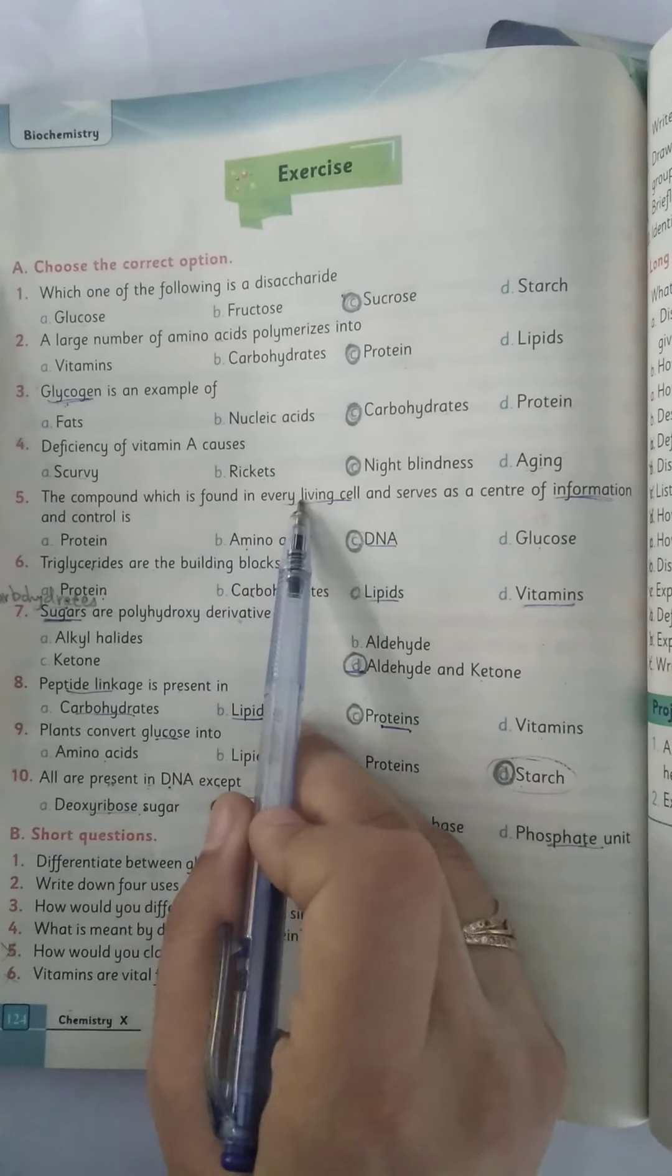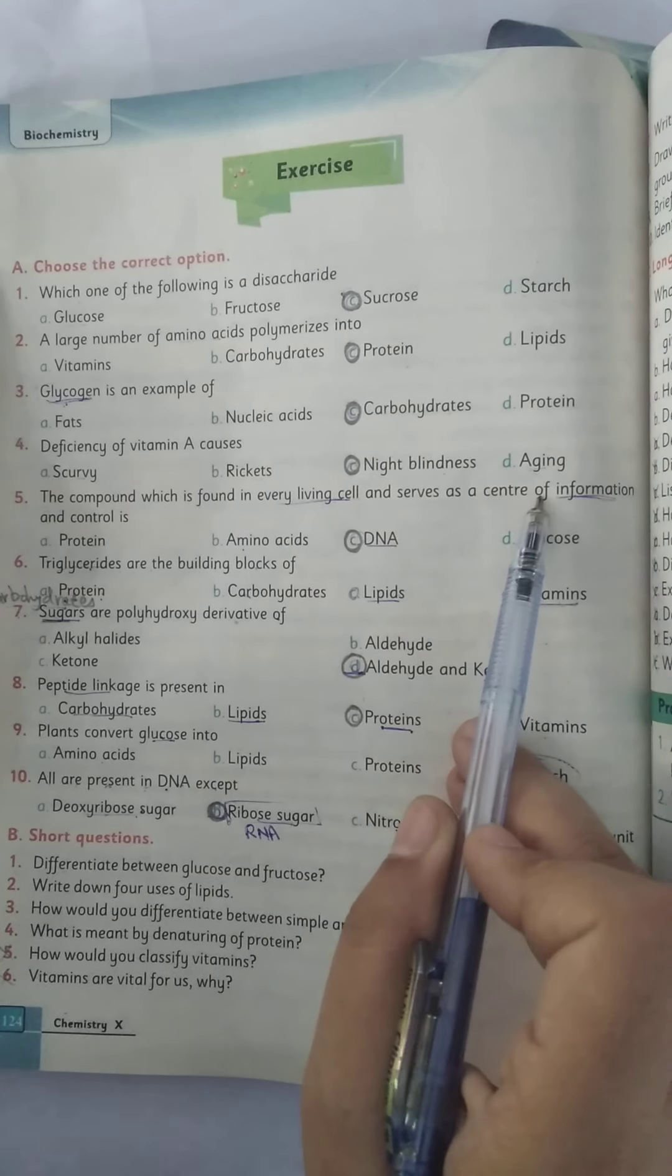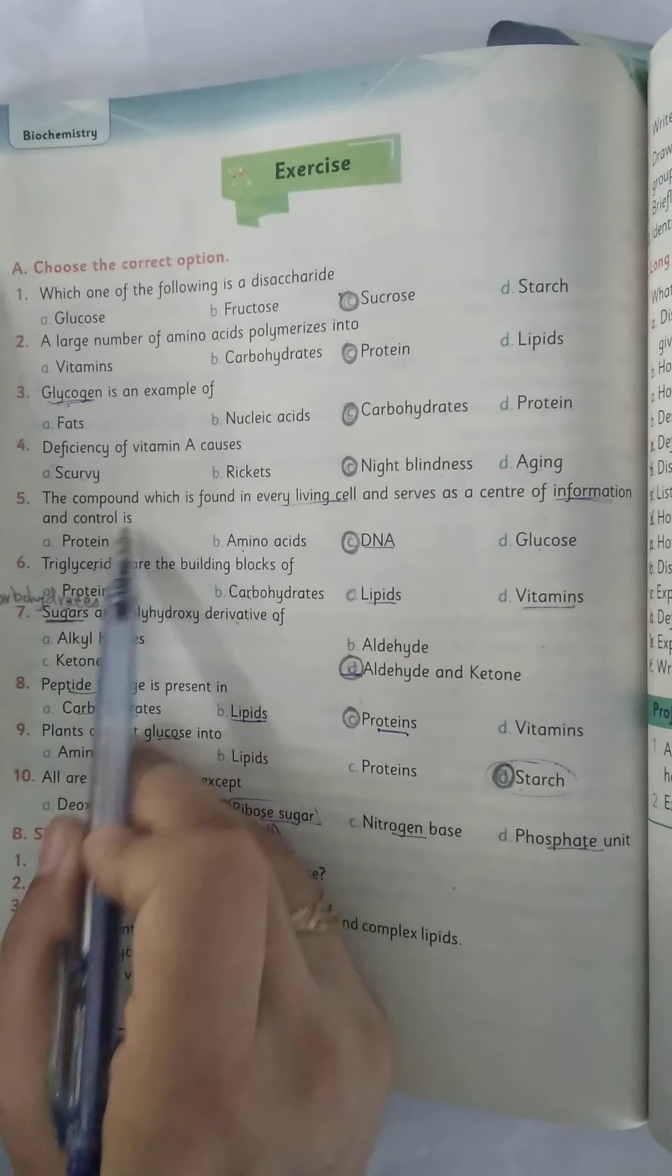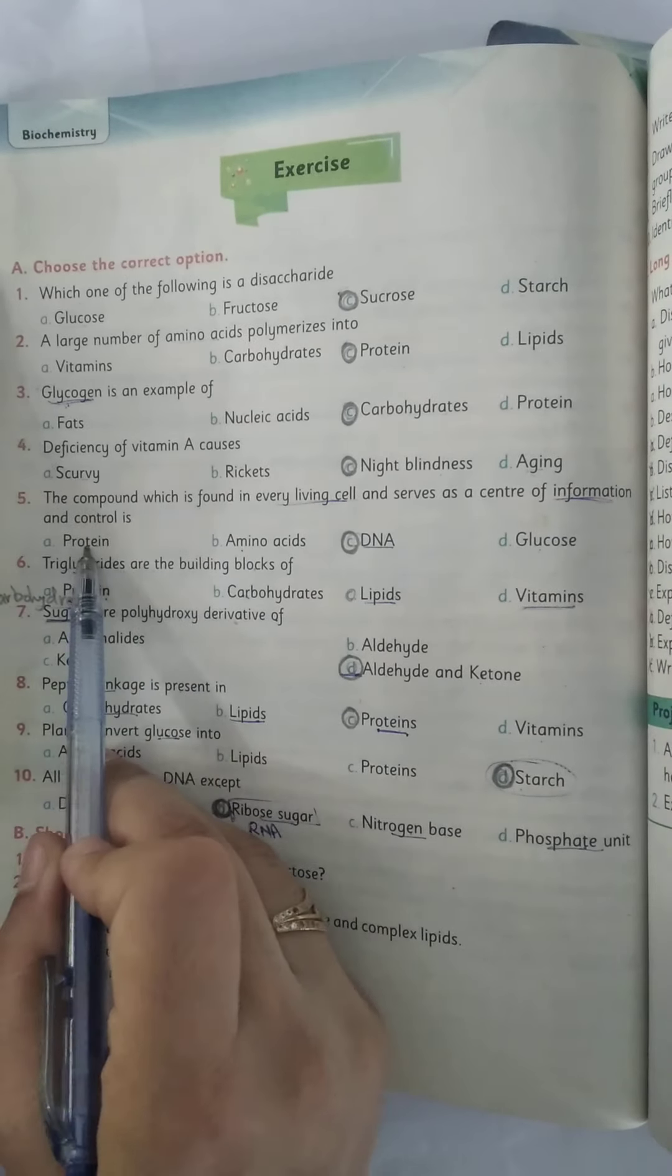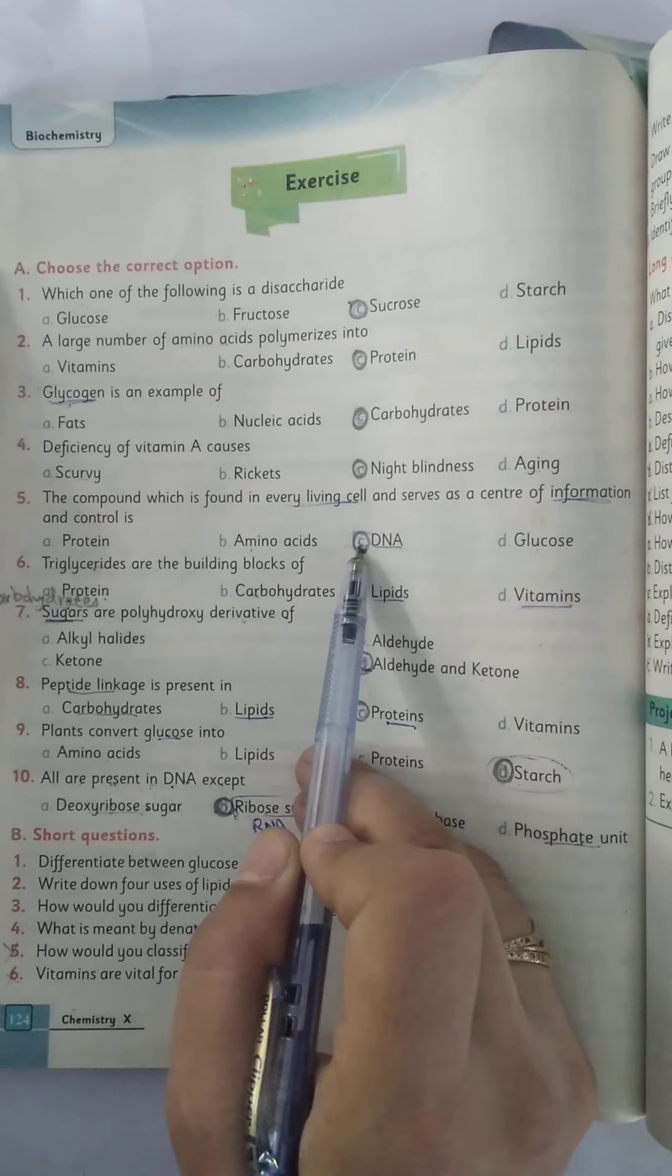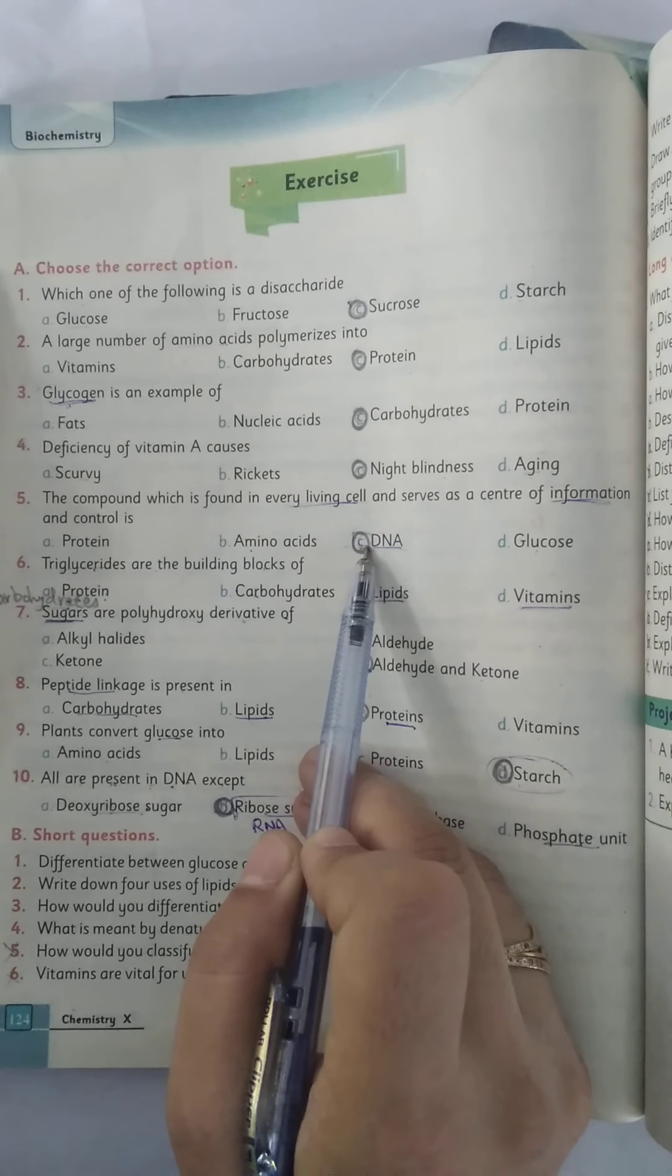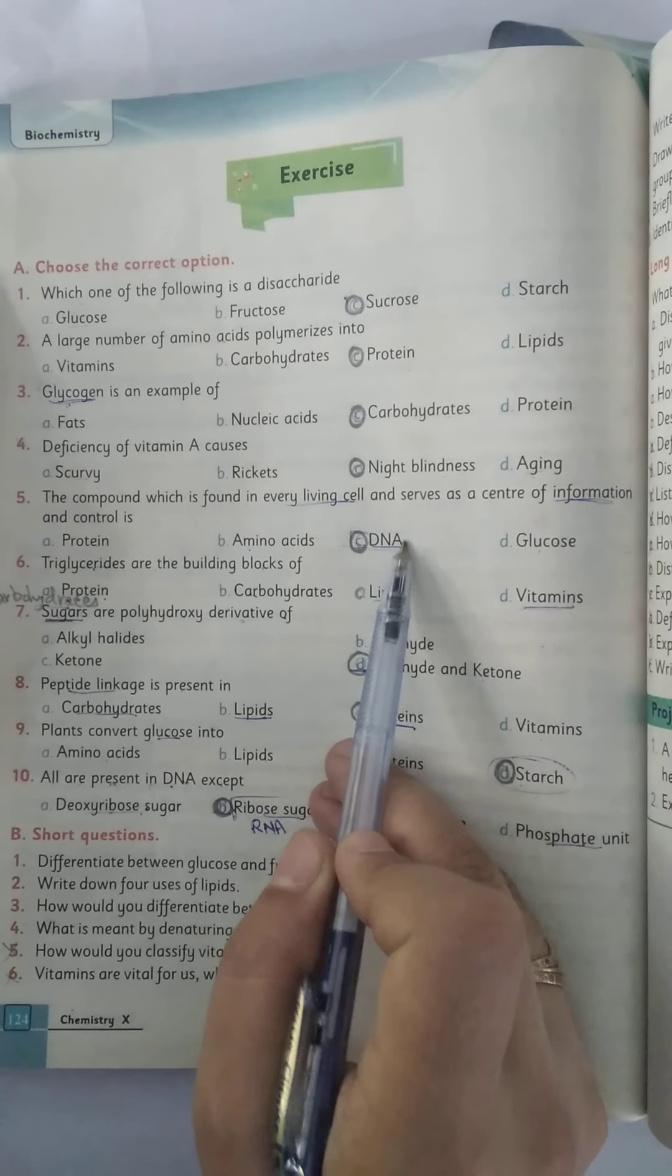The compound which is found in every living cell and serves as a center of information and control is proteins, amino acids, DNA, glucose. As you know that the nucleic acid, that is DNA, is present in all the living cells and it gives the genetic information for the formation of new cells and new living organisms. So the correct option is DNA.